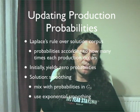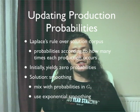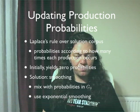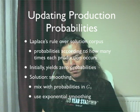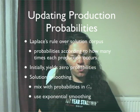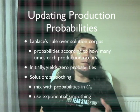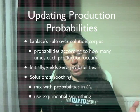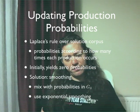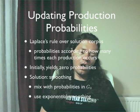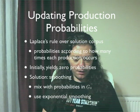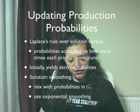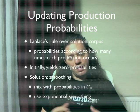Updating production probabilities is the first update algorithm. We are basically using Laplace's rule over the solution corpus, so we have probabilities according to how many times each production occurs. Naturally this will give us zero probabilities for many productions in the initial problems, so we need smoothing. We recommend two approaches: we can mix with probabilities in G0, or we can use exponential smoothing. The kind of smoothing you perform will change the function of the memory, and you can bias it towards long-term or short-term memory using different approaches.